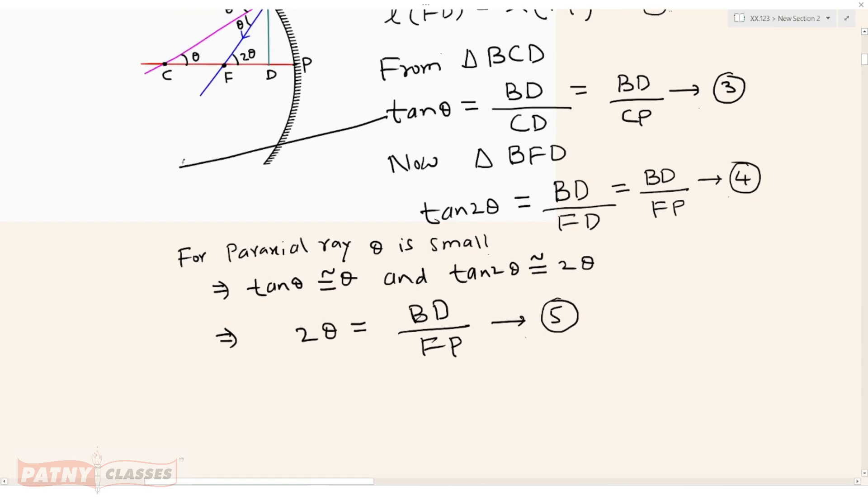And tan theta equals BD upon CP, which implies theta equals BD upon CP. Upon putting theta value here in equation number 5, therefore 2 into BD upon CP equals BD upon FP. Both sides BD and BD get cancelled.